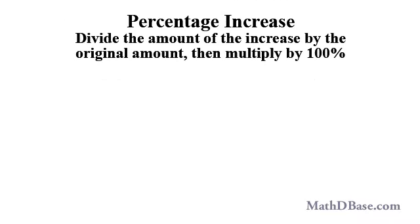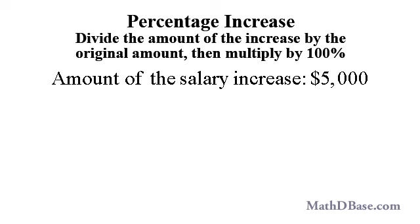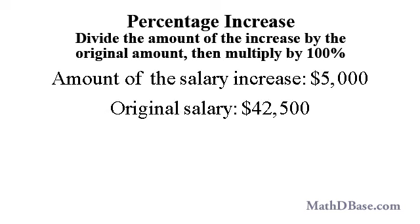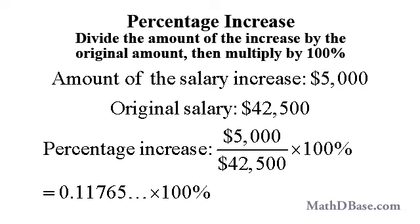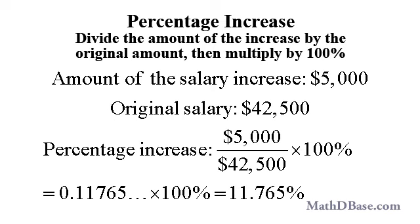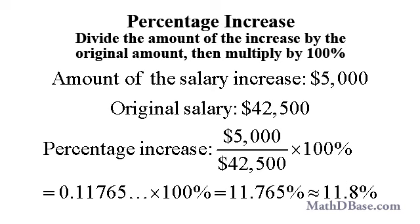To find a percentage increase of a number, divide the amount of the increase by the original amount, then multiply by 100%. Fred received a $5,000 per year salary increase. If his salary before the increase was $42,500, what was the percentage increase? As a fraction of his original salary, $5,000 is $5,000 over $42,500, which is equivalent to about 0.11765. The percentage increase is 0.11765 times 100%, or 11.765%, or 11.8%, rounded to 1 decimal place.